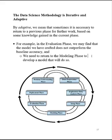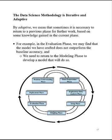The data science methodology is iterative and adaptive. By adaptive we mean that sometimes it's necessary to go back to a previous phase and work on that previous phase some more based on knowledge gained in the current phase. For example, we're out in the evaluation phase and we find that our highly crafted model actually doesn't beat the baseline accuracy model — so we've got to go back to the modeling phase and develop a model that'll beat the baseline. That's all that is — it's adaptive, you go back and forth as needed.